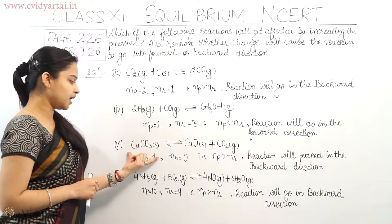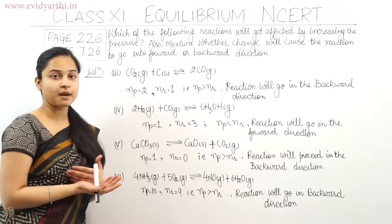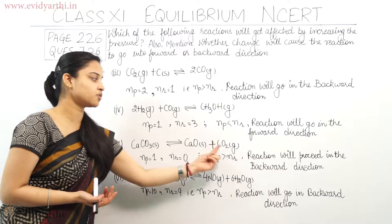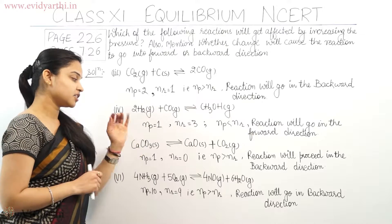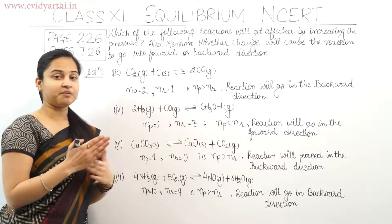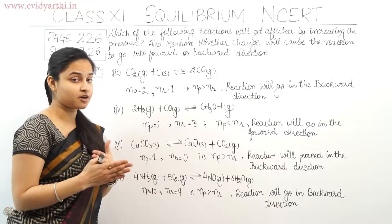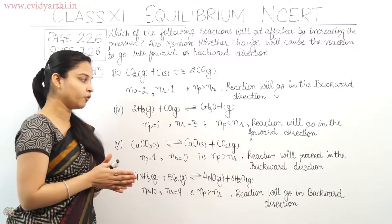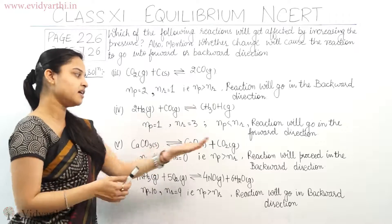The fifth reaction: CaCO₃(s) in equilibrium with CaO(s) + CO₂(g). The number of moles in the product case is only 1 (only the gaseous CO₂), and the number of moles in the reactant case is 0 (only solids). So Nr = 0 and Np = 1, meaning Np is greater than Nr. Hence the reaction will move in the backward direction.